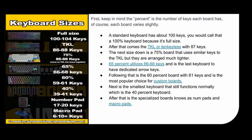A standard keyboard has about 100 keys — you would call that a 100% keyboard. After that comes the TKL, or 10 keyless, with 87. The next size down is a 75% board. 65% utilizes 66 to 68 keys and is the last keyboard to have dedicated arrow keys. Following that is the 60% keyboard with 61 keys, the most popular choice for custom boards. Next is the 40% keyboard, and after that are specialized boards known as number pads and macro pads. The percentages refer to how big the keyboard is and how many keys it has compared to the standard keyboard.